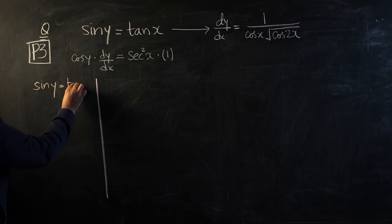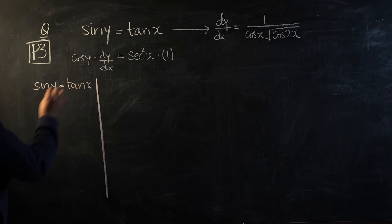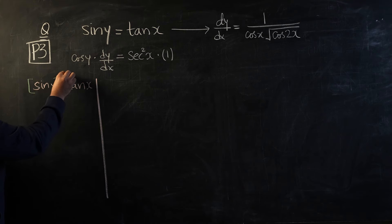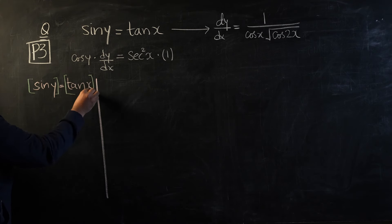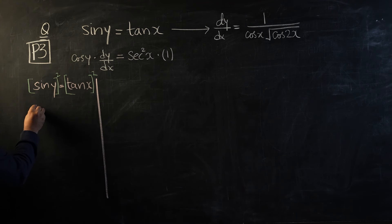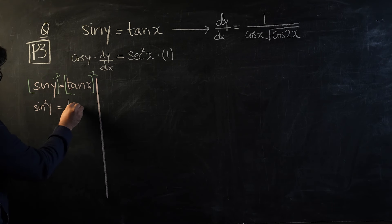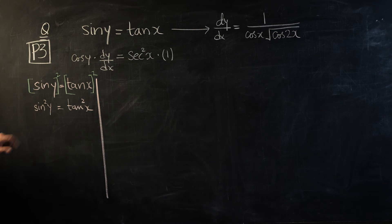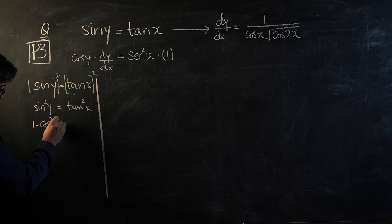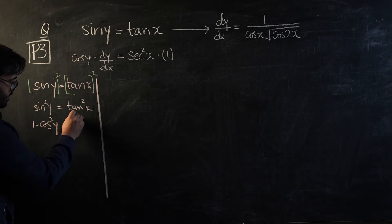...equals tan x, and I take squares on both sides of the equation, I will have sine squared y equals tan squared x. Now I know that sine squared y can be written as 1 minus cos squared y. So this gives us 1 minus cos squared y equals tan squared x.